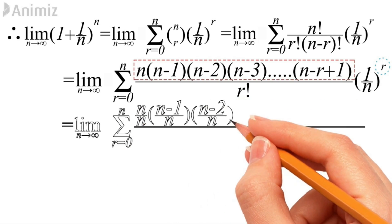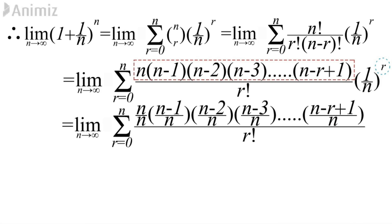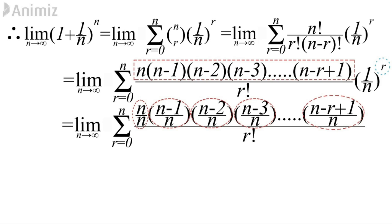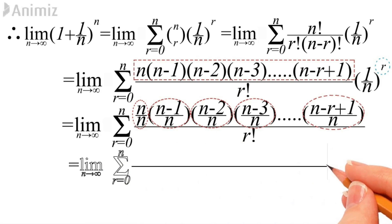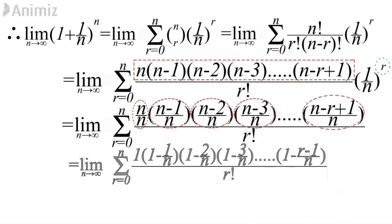Inside the sum it becomes n/n, then (n-1)/n, then (n-2)/n, continuing up to (n-r+1)/n, with the whole thing divided by r!. Breaking each subtraction in the numerator into two parts, we get: 1·(1 - 1/n)·(1 - 2/n)·(1 - 3/n)·...·(1 - (r-1)/n), all divided by r!.